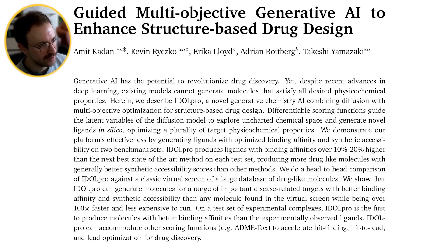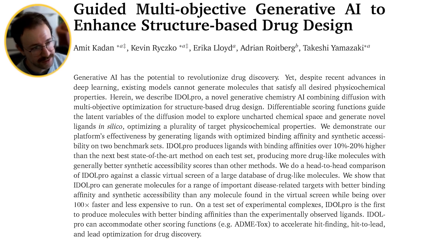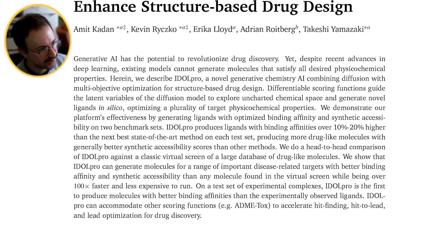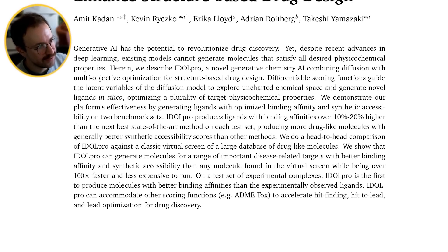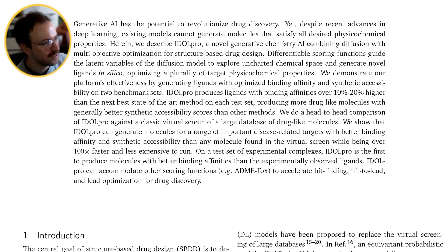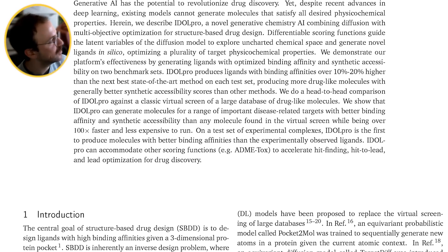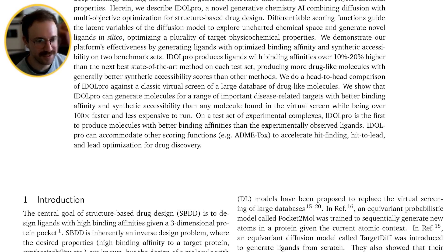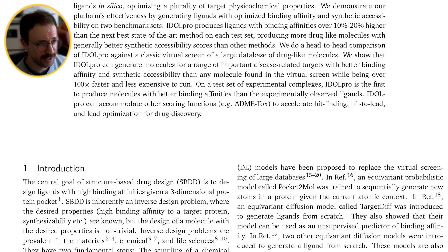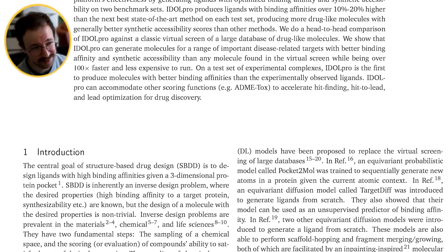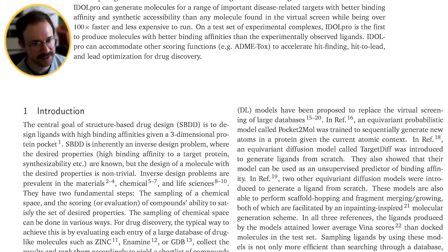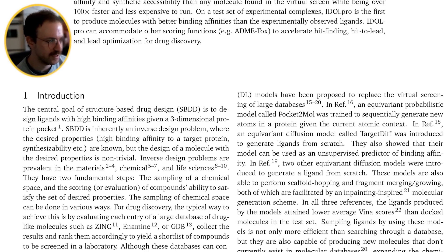Traditionally, small molecules are designed for a target protein by iterating over a large chemical database and trying to find molecules with desired physicochemical properties, such as synthetic accessibility, solubility, and affinity with the protein you're targeting. However, this is very time-consuming because chemical libraries can be quite large, often spanning billions of molecules, making it extremely computationally exhaustive to evaluate properties for each molecule.